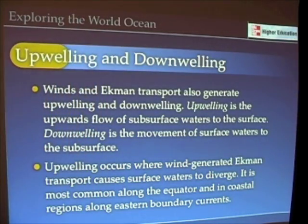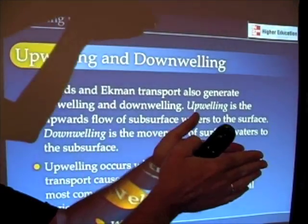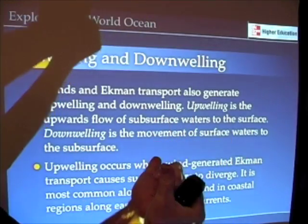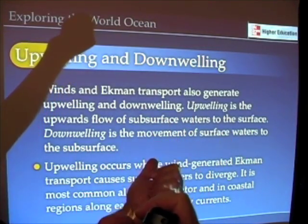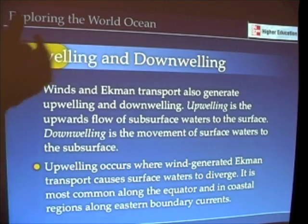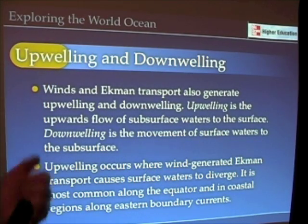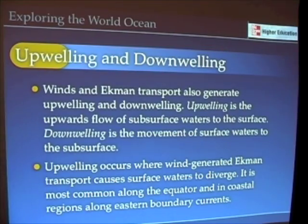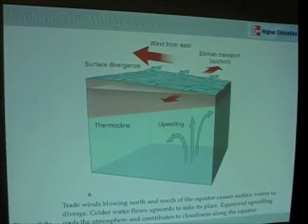Upwelling is caused by wind-generated Ekman Transport. When the movement of winds causes water to move 90 degrees to the right on either side of it, that causes surface waters to diverge and causes upwelling. Let's see what that looks like.